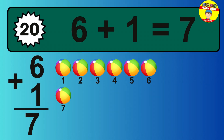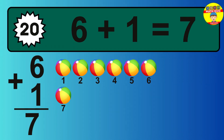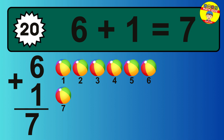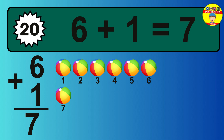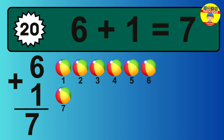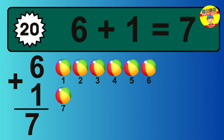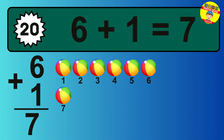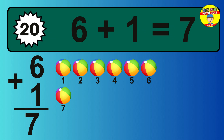So the answer is 6 plus 1 is 7. Let's count it: 1, 2, 3, 4, 5, 6, 7.